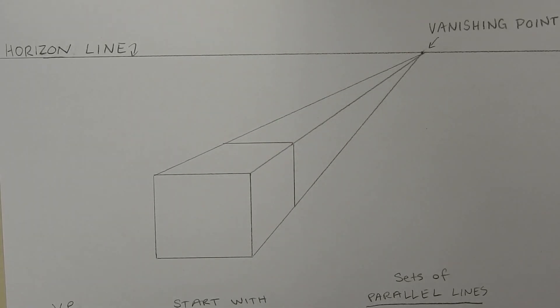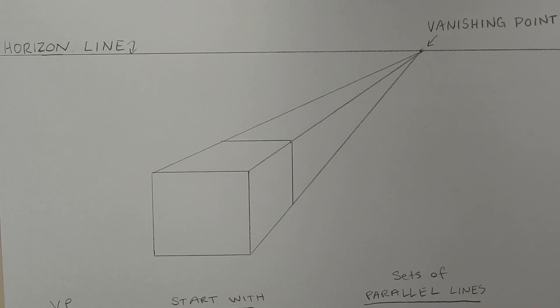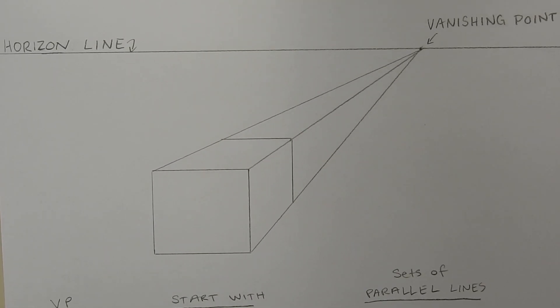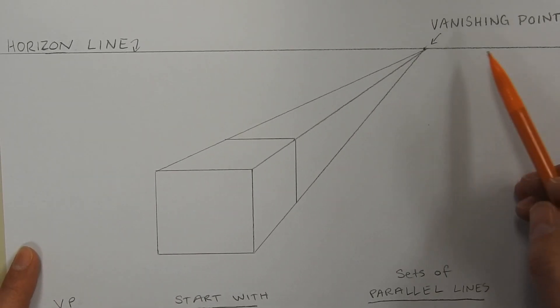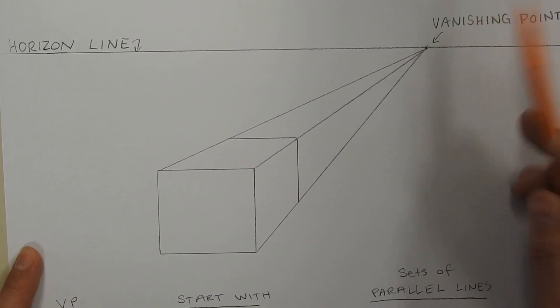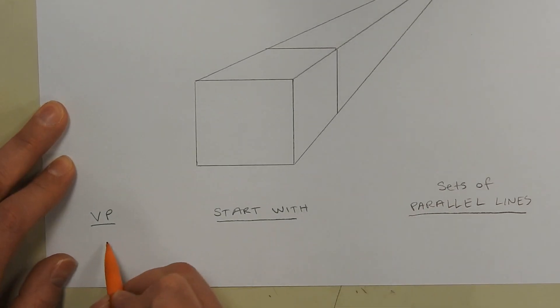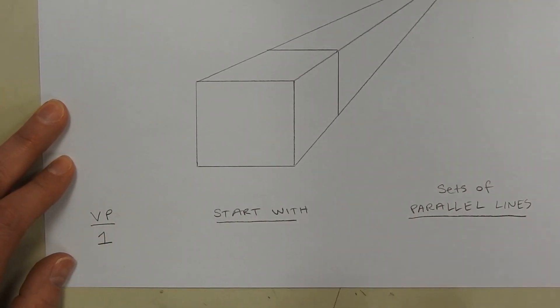When you're drawing in perspective it's important to understand the differences between one point, two point, and three point perspective. When you're working with one point perspective, you're going to have a horizon line and one vanishing point.